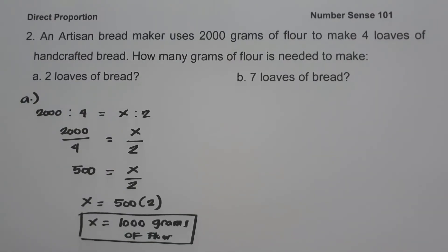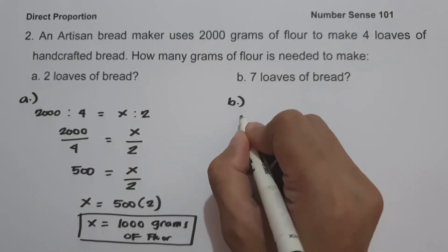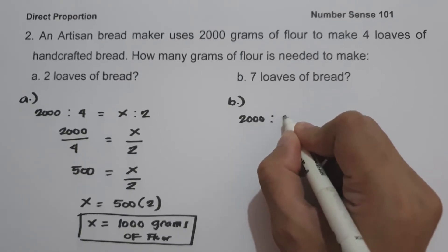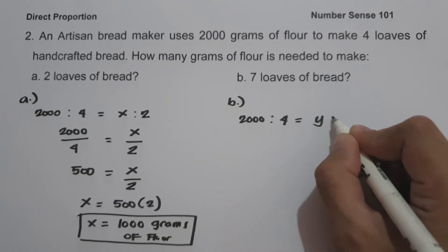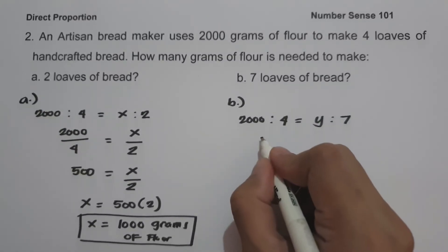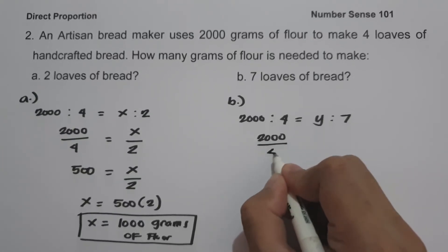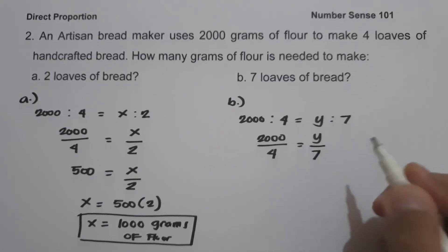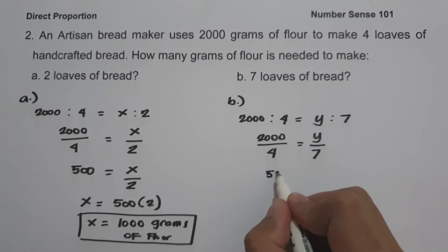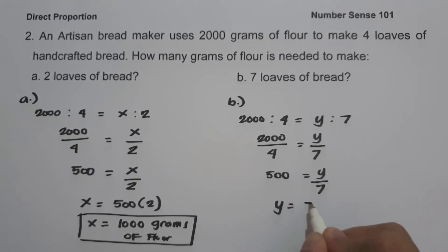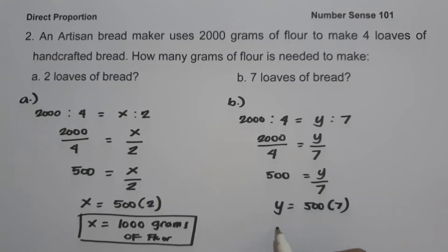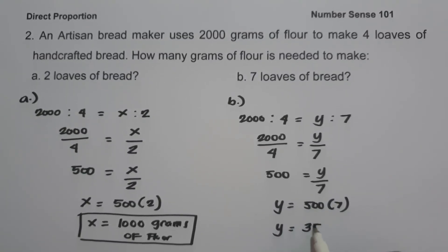On letter B, to determine how many grams of flour are needed for 7 loaves of bread, let us have 2000 grams of flour is to 4 loaves of handcrafted bread equals Y — that is the number of grams of flour needed for 7 loaves of bread. So let us rewrite this one as 2000 over 4 equals Y over 7. 2000 divided by 4, that is 500, equals Y over 7. And to simplify, let us have Y equals 500 times 7, and that is 3,500 grams of flour.